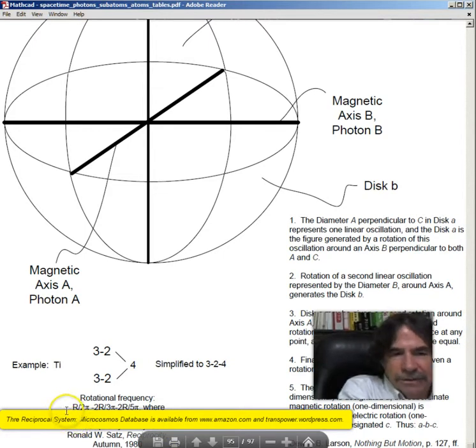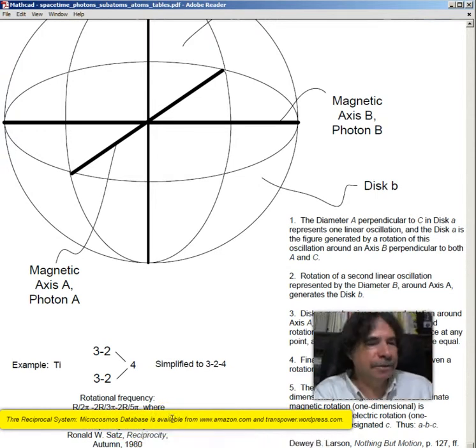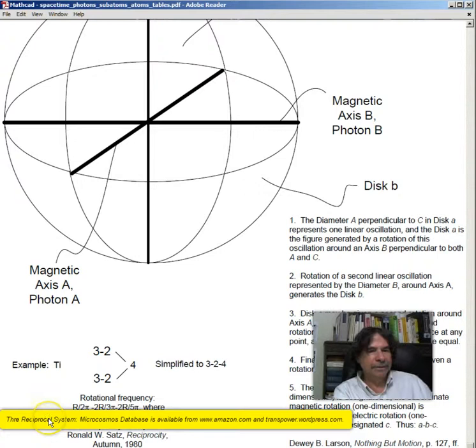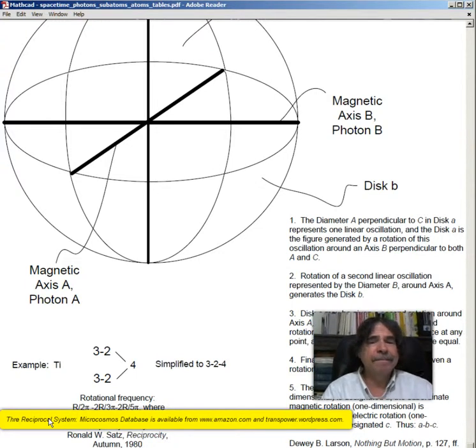Now, the rotational frequency is R divided by 2 pi, hyphen 2 R over 3 pi, hyphen 2 R over 5 pi, where R is the Ritberg frequency, which is 3.2880575 times 10 to the 15 revolutions per second. The photon frequency equals 2 R cycles per second. And you can see this was all pointed out in the autumn of 1980. As I've said, I've worked with this theory for decades.